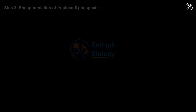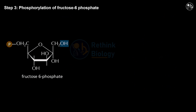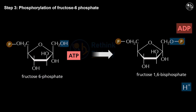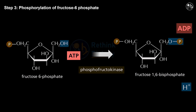Step 3: Phosphorylation of fructose 6-phosphate. In this step, another molecule of ATP transfers a phosphate group to fructose 6-phosphate and converts it into fructose 1,6-bisphosphate by the action of enzyme phosphofructokinase. The product of this step is fructose 1,6-bisphosphate, which has two phosphate groups attached to its first and sixth carbon atoms.